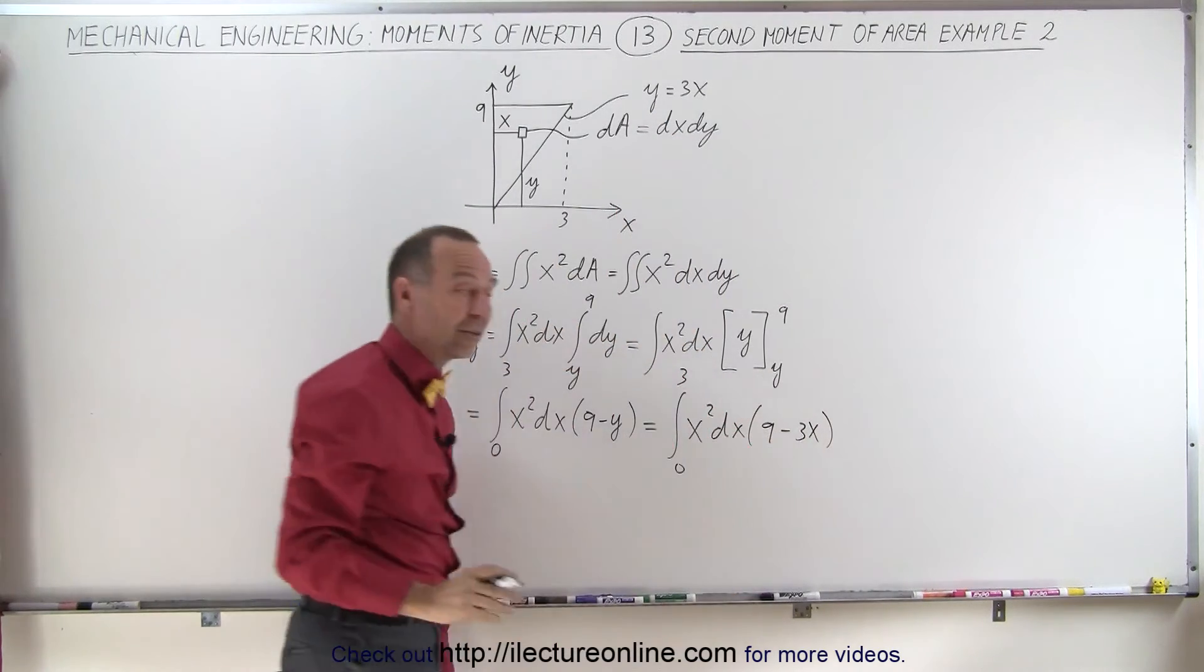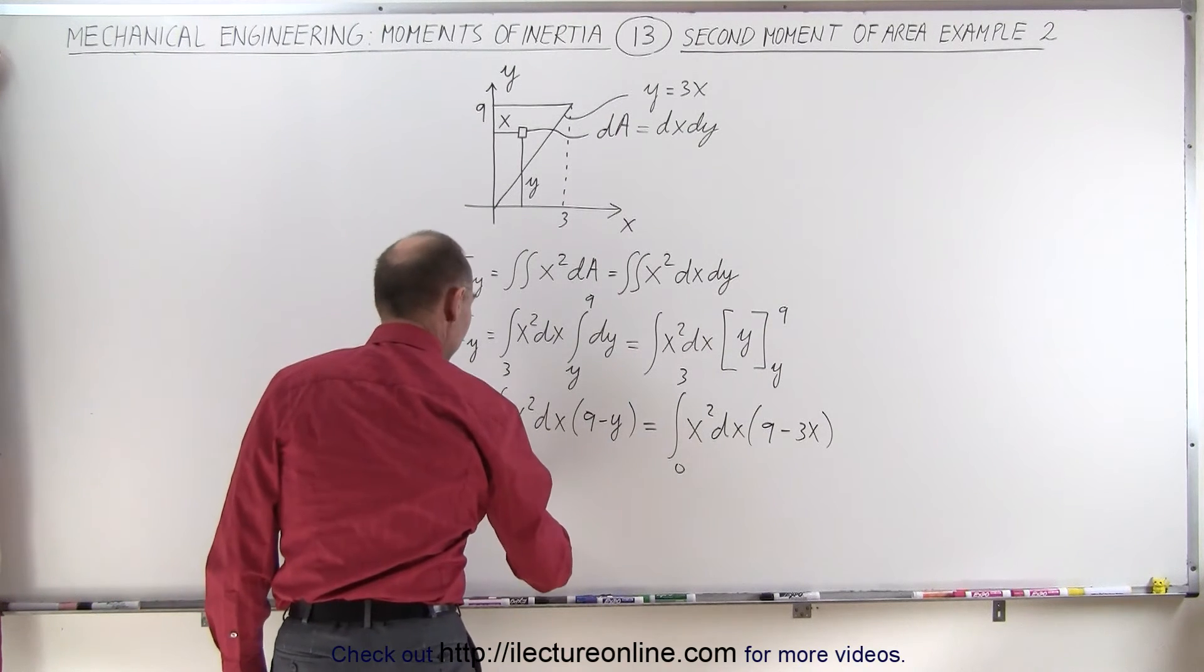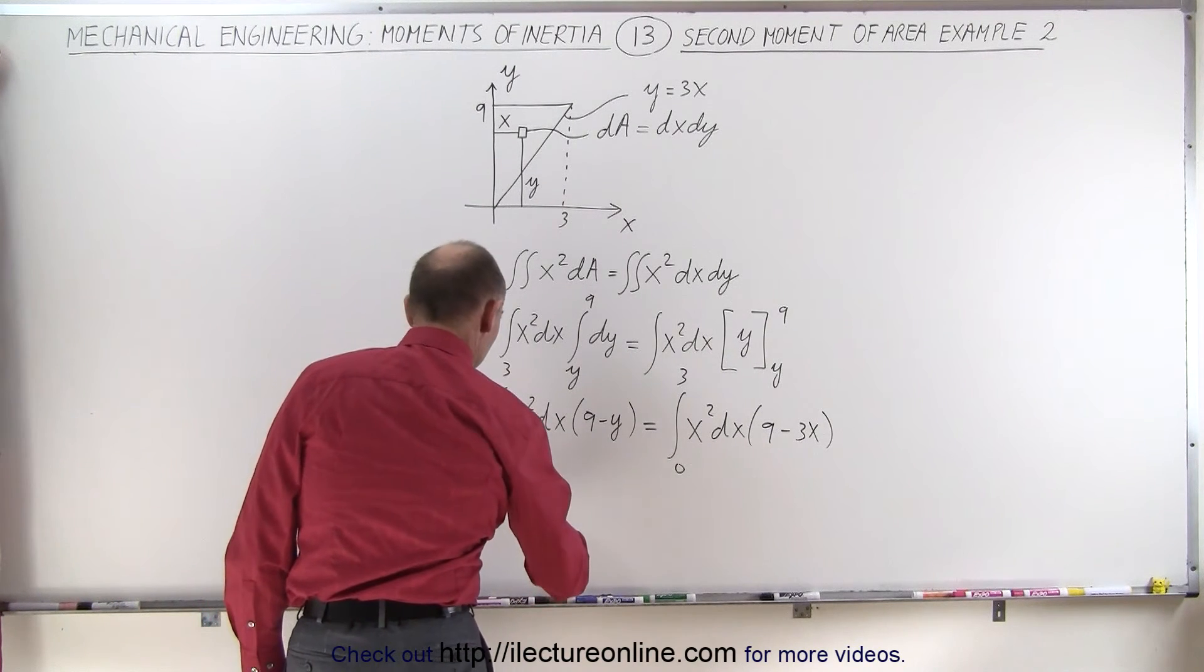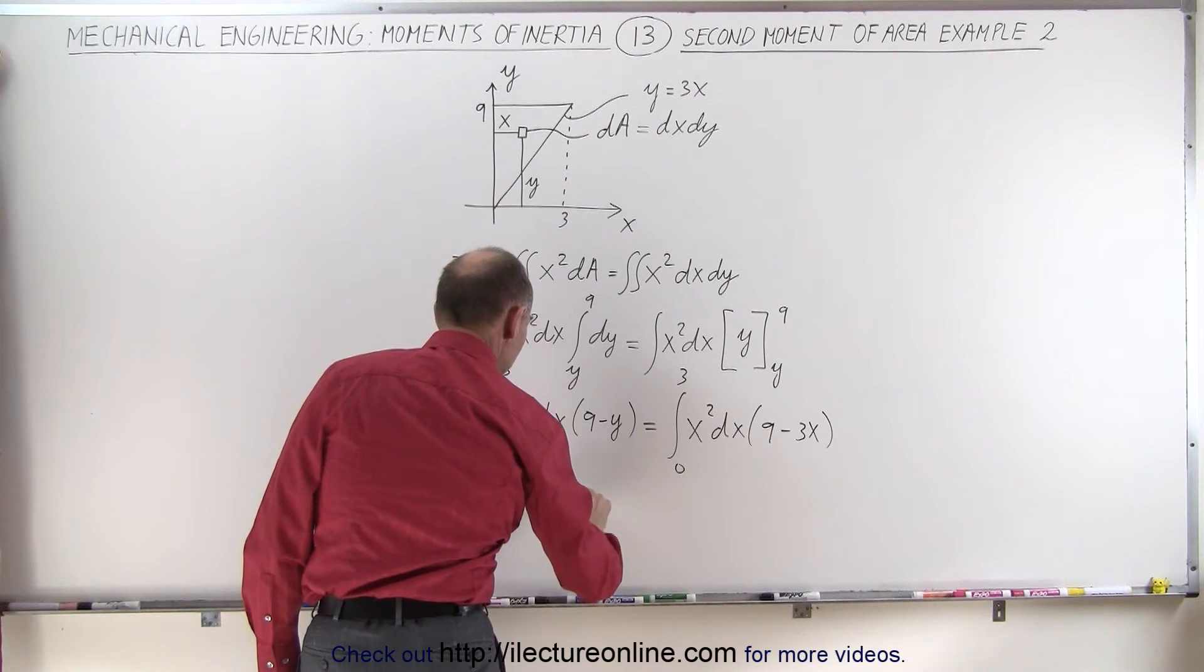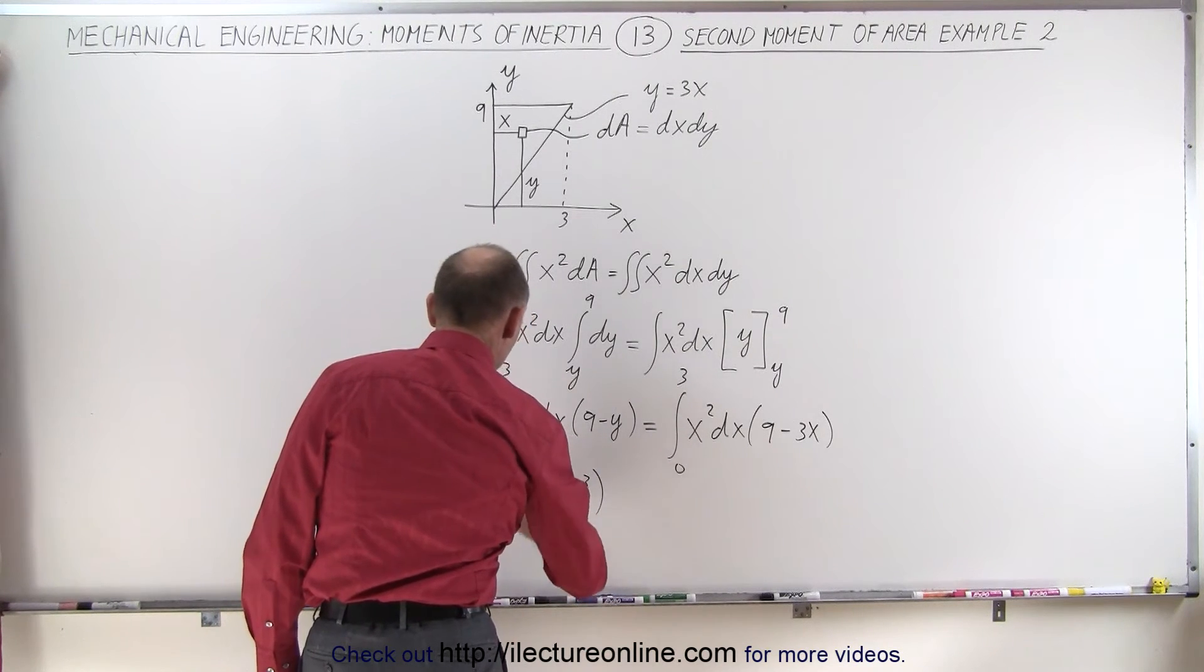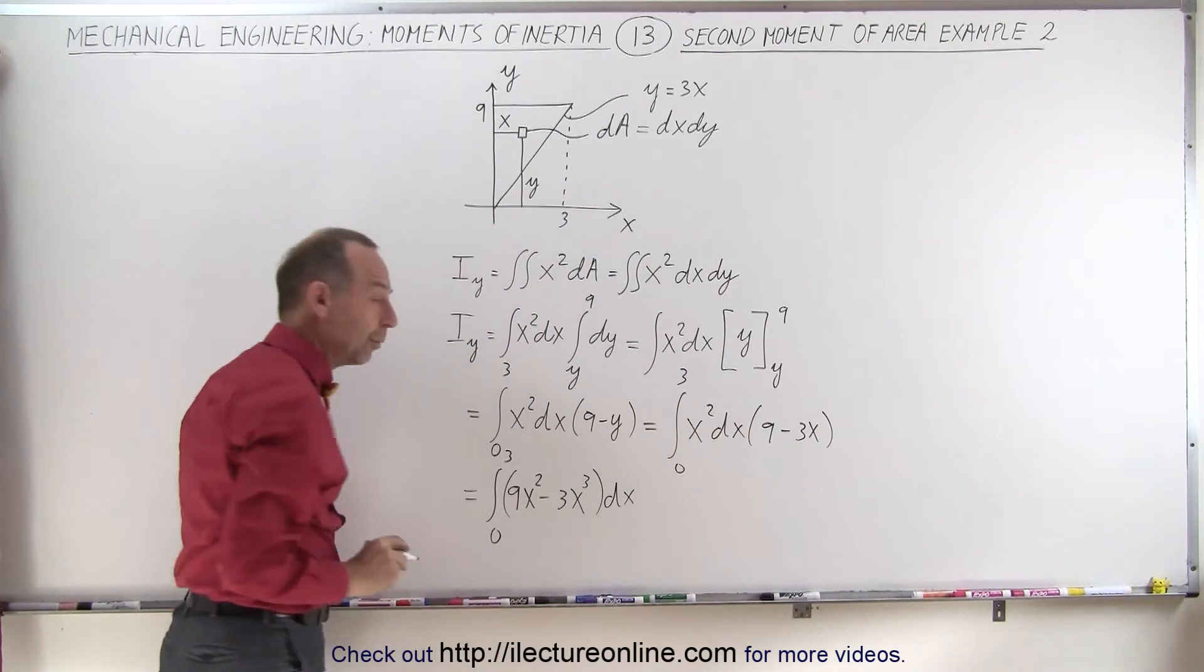Now everything in the integral sign is in terms of x, so now we write this as the integral of 9x squared minus 3x cubed, all of it times dx, with limits from 0 to 3. Now we're ready to integrate.